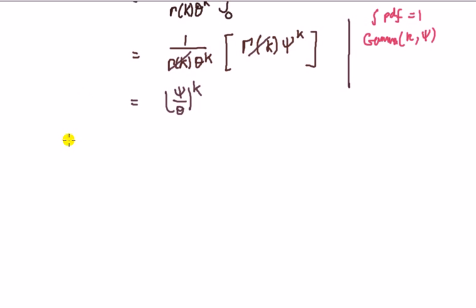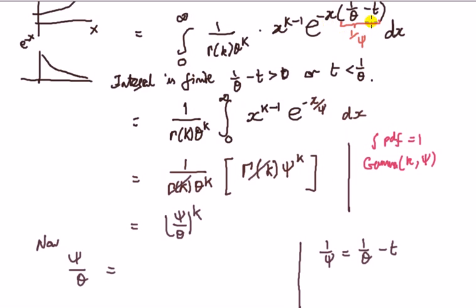So the MGF is phi over theta, of course we can't leave it like this because we've got to, you know, what is phi? We defined it earlier so we've got to substitute it back in. Now let's explain: phi over theta is equal to, so let's do some working on the side here. We said 1 over phi is equal to 1 over theta minus t from here.